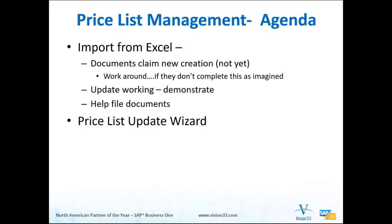Normally you can create new ones in this functionality, but as it relates to price lists, so far it's only showing us that we can update them. So if I was creating a new one, I'll show you what a workaround will be if this is all they actually deliver and don't allow us to actually create new ones. I say that because we're in patch level zero in ramp-up, and there may be more coming by the time we get the general release — we'll have to wait and see.